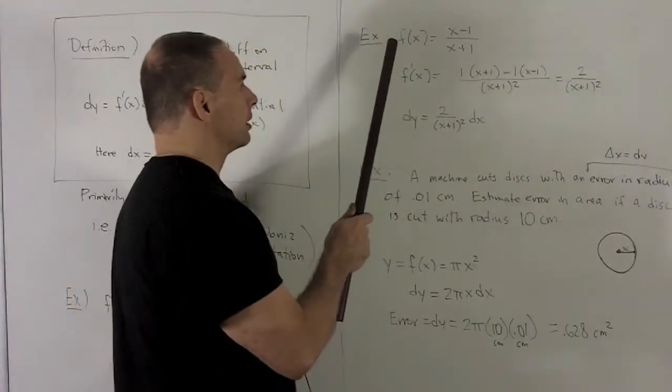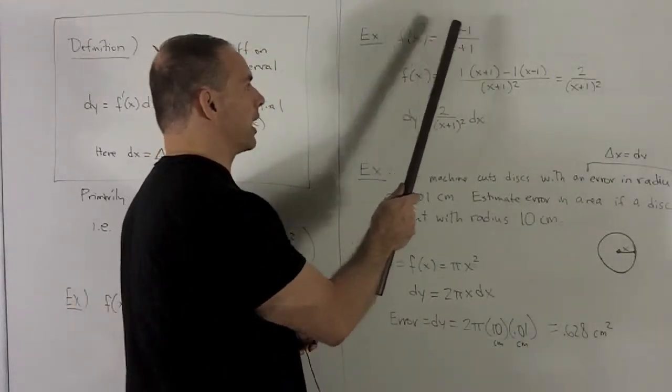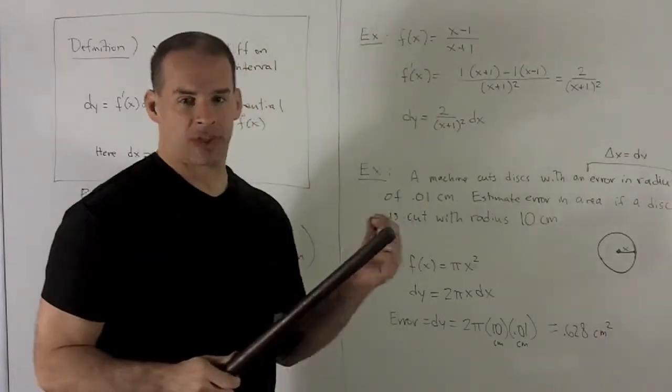All right, for another one, let's let f(x) be equal to (x minus 1) over (x plus 1). That's our y.